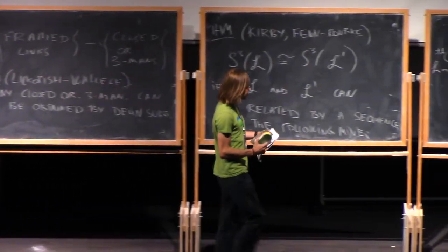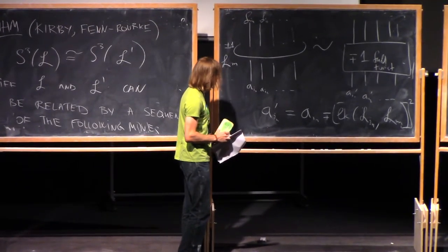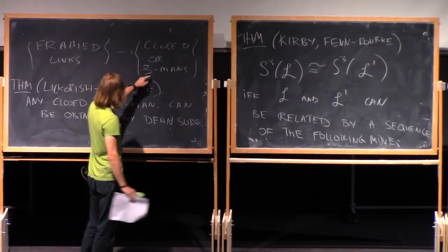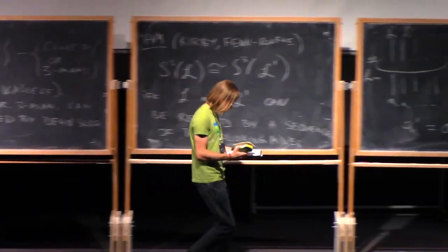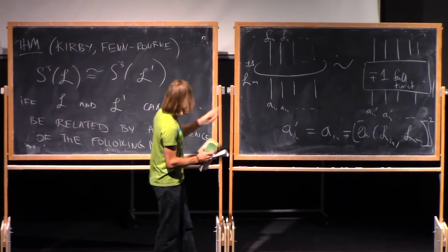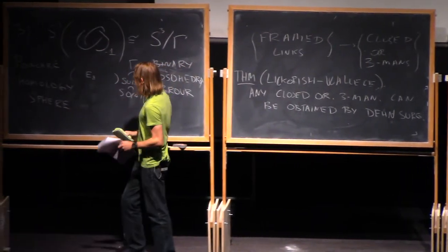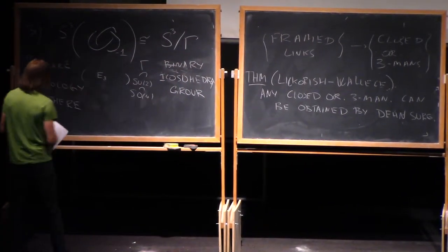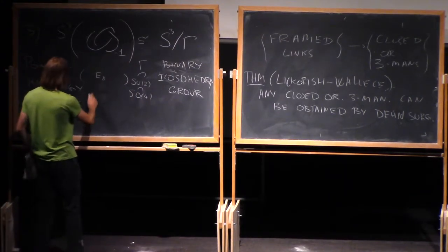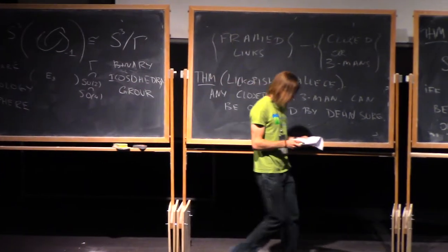So this gives exactly what is the equivalence relation on the links, the framed links which gives the same 3-manifold. So in the problem set, there will be example to relate this particular surgery on this particular framed link to a couple of other links using these moves.